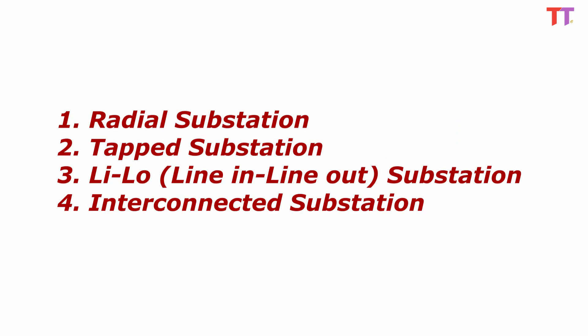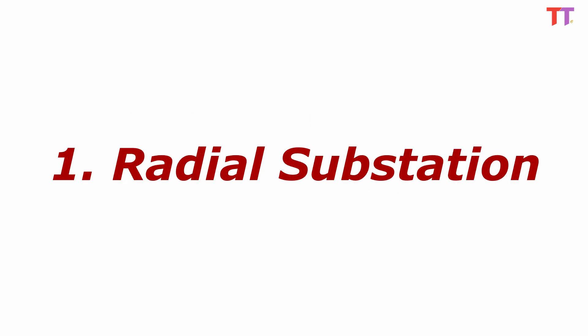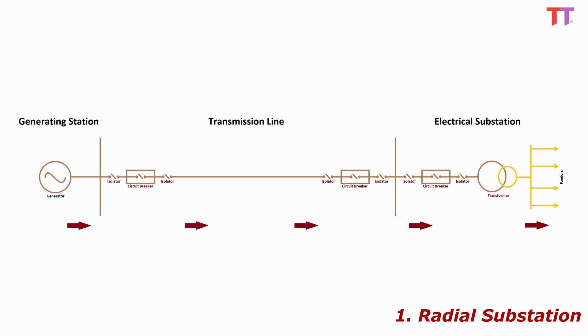So let's start with different schemes or layouts of substation interconnection. 1. Radial substation. In this type of layout, an electrical substation has a single transmission line as a power source and loads are connected at respective feeders. Since this type of layout needs only one transmission line as a power source, it becomes an economical layout type.